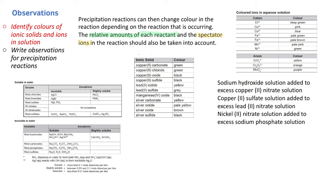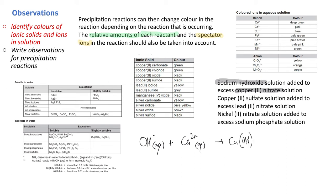Sodium hydroxide solution is added to excess copper nitrate solution. Those are our two reactants: sodium hydroxide and copper nitrate. Using the solubility table, our two combinations are sodium nitrate and copper hydroxide. Sodium nitrate is soluble, so we're just looking at copper hydroxide. Most hydroxides are insoluble, and copper is not an exception. So the ionic equation is: OH⁻(aq) + Cu²⁺(aq) → Cu(OH)₂(s).